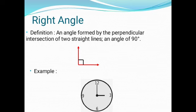Right Angle: An angle which measures exactly 90 degrees is called a right angle.